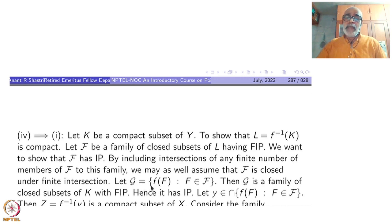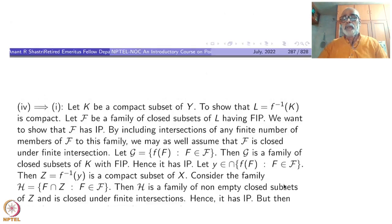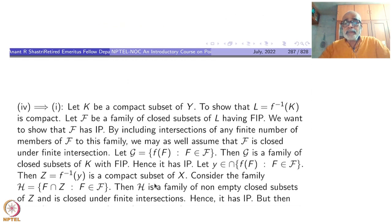Therefore G has the intersection property. The intersection of all members of G is non-empty. Take y belonging to the intersection of all f(F) where F is in the family. Put Z equal to f-inverse of this single point y — that is a compact subset of X, and it is a subset of L.